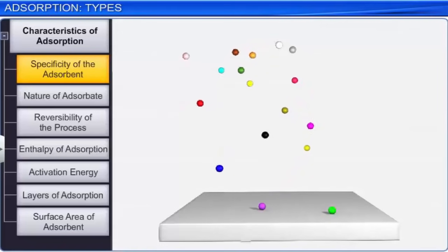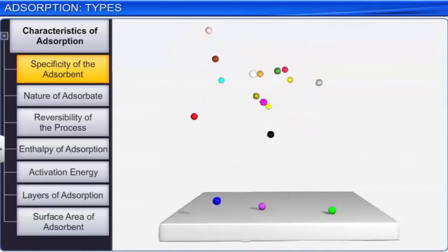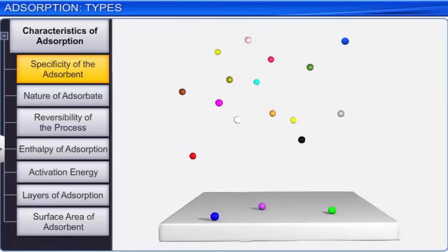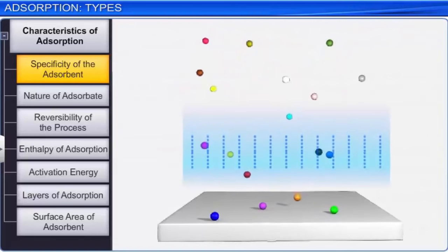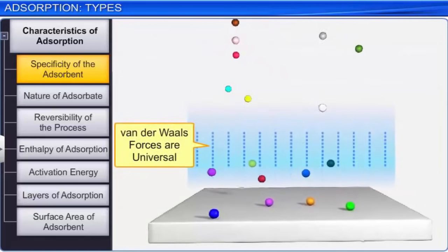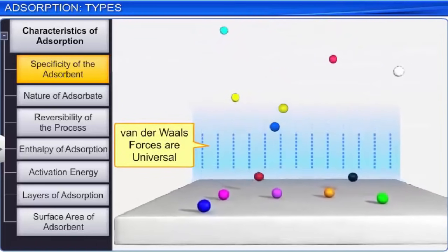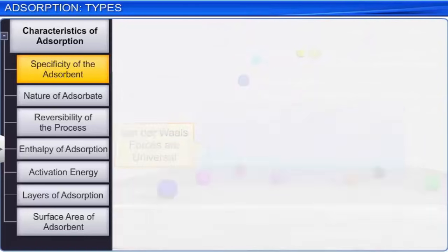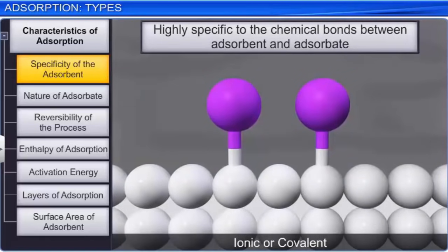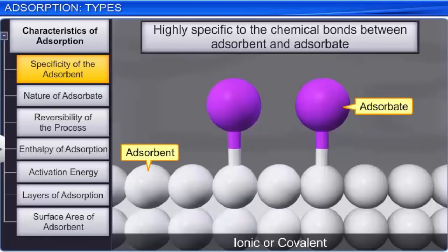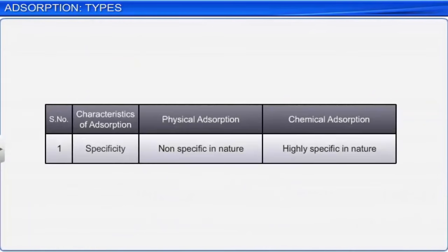In physical adsorption, the surface of the adsorbent has no specific preference for any type of gas molecules, because the van der Waals forces are universal. However, chemical adsorption is highly specific and will occur only when an ionic or covalent bonding is possible between the adsorbent and the adsorbate. Therefore, while physical adsorption is not specific in nature, chemical adsorption is highly specific.